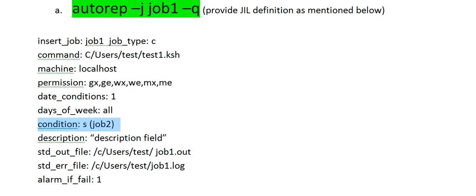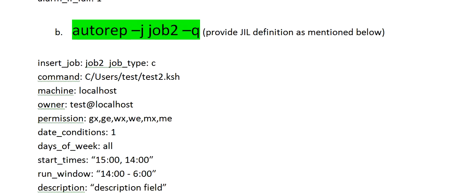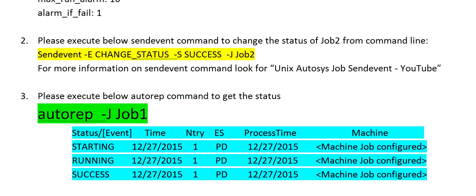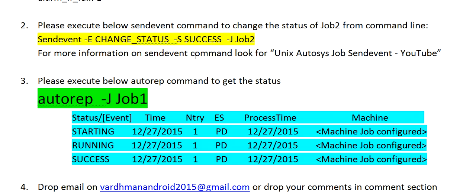To start job one forcefully, what you can do is change the status of job two to success, so that job one can get its triggering point. To do this, you have to use the sendevent command, which will change the status of job two to success mode, so that job one can get the triggering point and will get started forcefully.